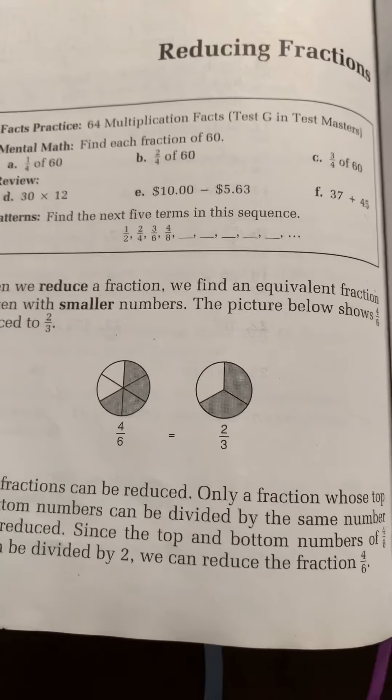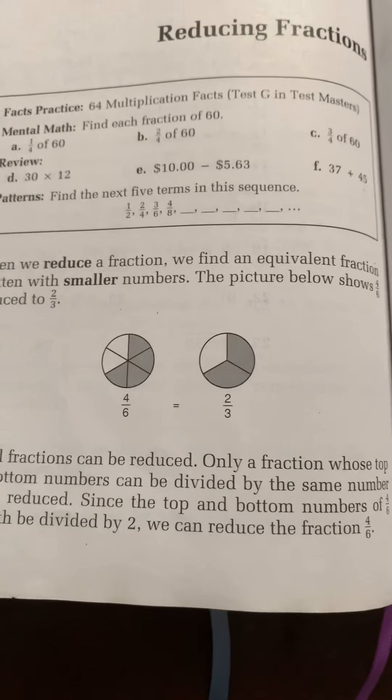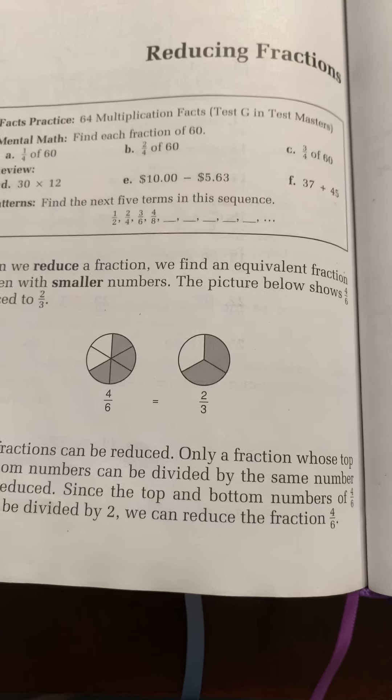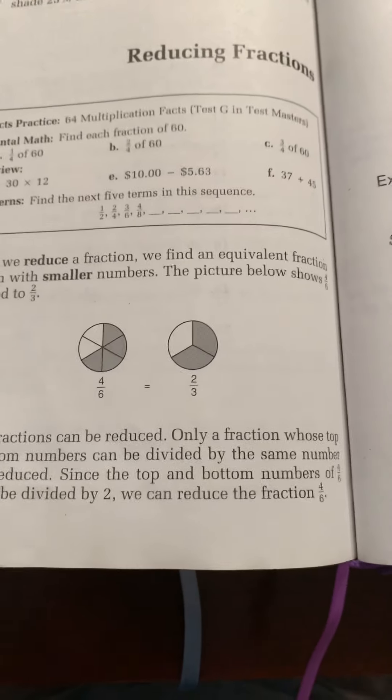But if they were two composite numbers that didn't share any of the same factors, then you would know they were reduced as low as possible. Okay? So let's go on to the next page.